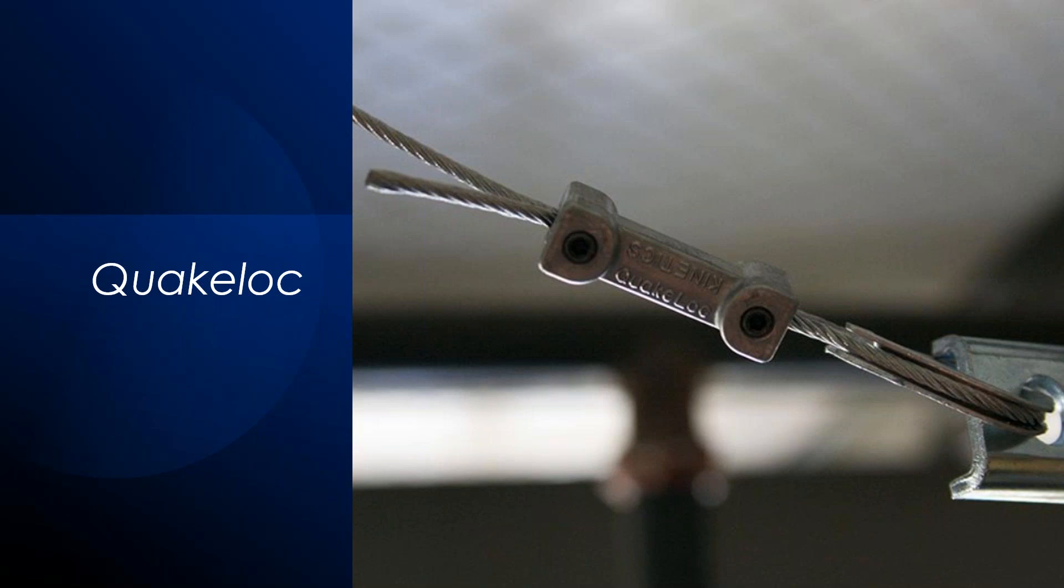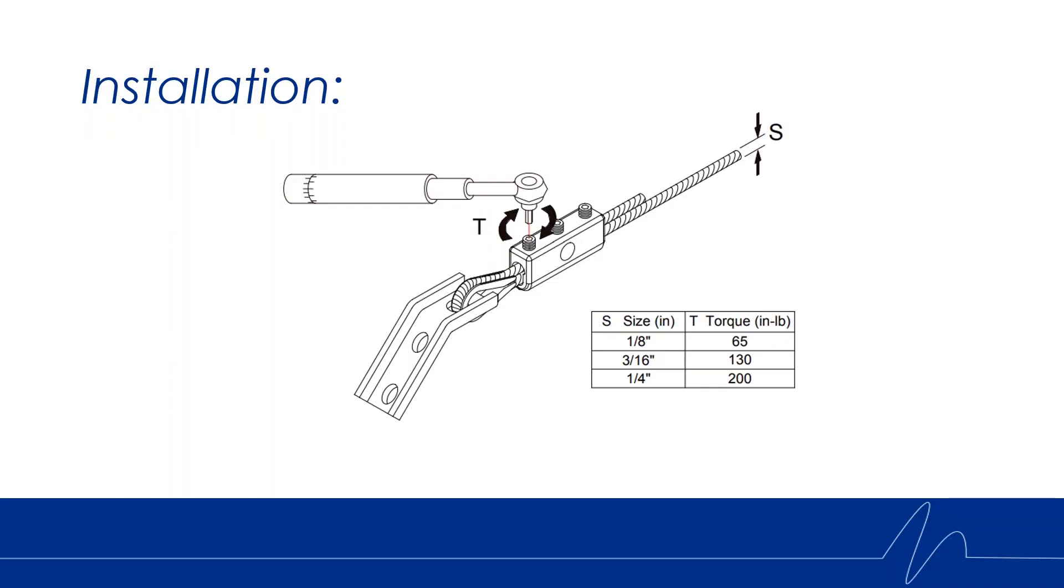However, the installation of the QuakeLock itself in the field can be sometimes a little lengthy and a little challenging. So in order to properly install a QuakeLock device, you do have to feed the cable through the QuakeLock twice. And then each one of the little adjustment screws does have to be torqued down to a certain torque setting using a torque wrench.